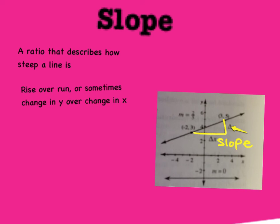Slope is the ratio that describes how steep a line is. Rise over run, or sometimes change in y over change in x, is how you can write the equation.